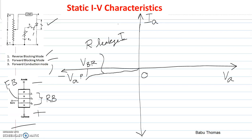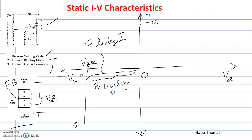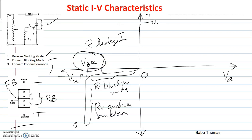Because of the avalanche breakdown, there is a certain increase in current. From P to Q, it is nothing but the avalanche breakdown. From O to P, we see it as the reverse blocking mode. And from P to Q it is the reverse avalanche breakdown region.